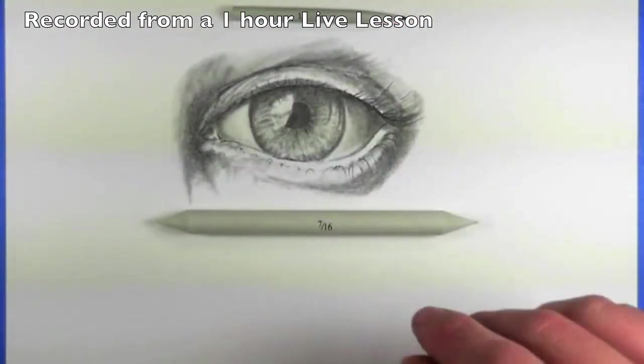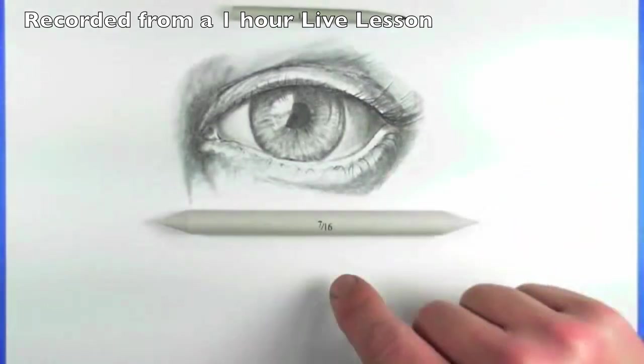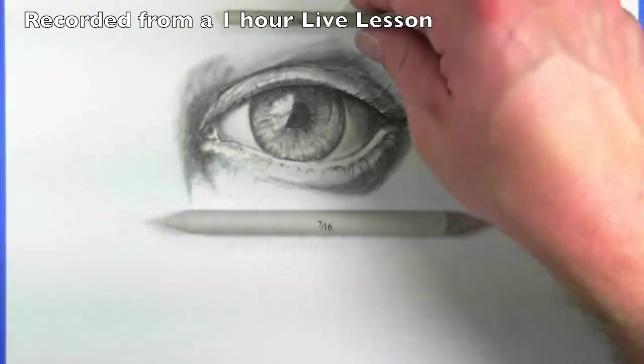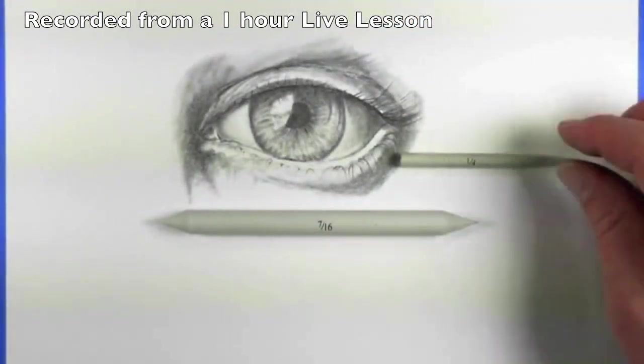The whole time I didn't use the blending stump at all, but they're the same except a blending stump is kind of compressed paper and a blending tortilla is kind of rolled up paper.